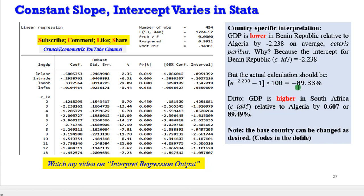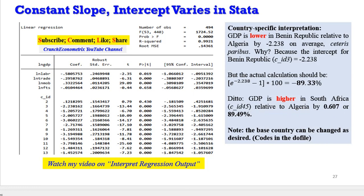We can also apply it to any country in the sample. The base country can also be changed as desired. Instead of Algeria, you can decide to put Zambia or Zimbabwe or Nigeria or Kenya as a base country. The codes are all written in the file. The base country can be manipulated or changed as desired by the researcher.